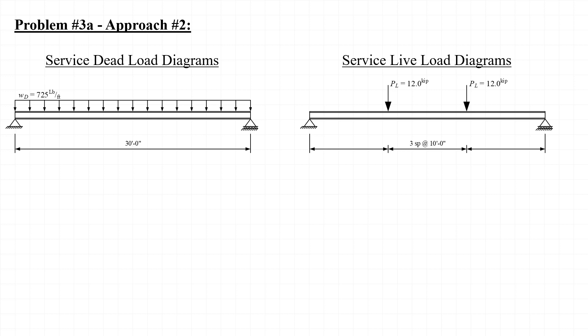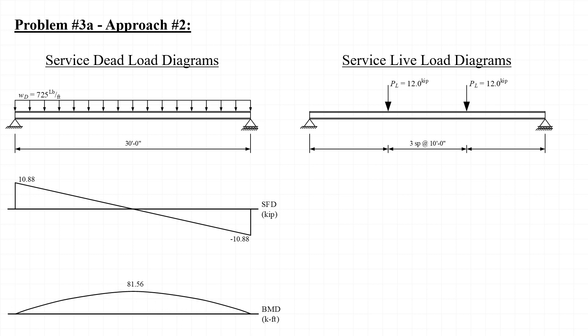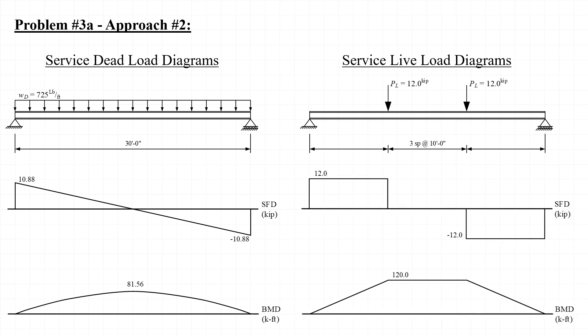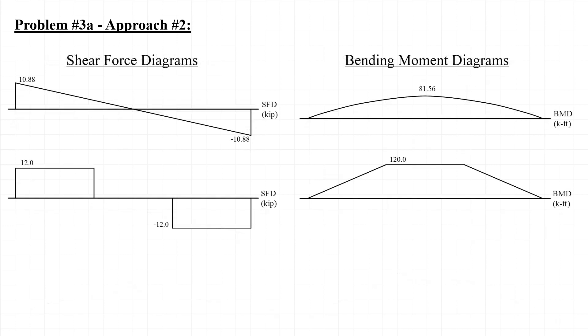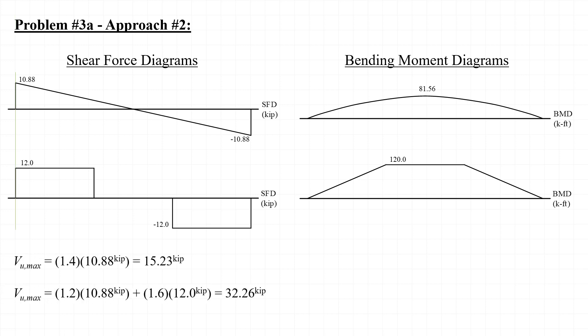Now let's solve the problem again using approach number 2. Using this approach, we first do our beam analysis to determine the service level shear forces and bending moments, and then apply the factors from our load combinations to these forces and moments. After sketching the shear force and bending moment diagrams for both the service dead load and service live load and rearranging them, we evaluate the load combinations using the service level shears at the left end of the beam. Load combination number 2 governs and we end up with a factored shear force V sub U equal to 32.3 kips.